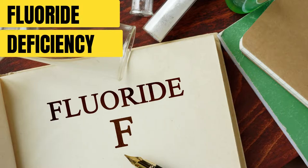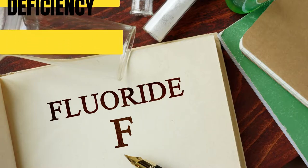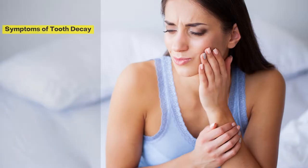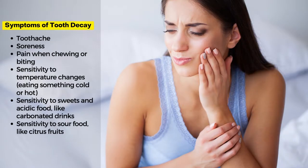Eating habits high in carbohydrates and sugars, such as candy or soda which contain high amounts of artificial sweeteners like aspartame, also contribute to decay. Symptoms of tooth decay include toothache, soreness, pain when chewing or biting, sensitivity to temperature changes when eating something cold or hot, and sensitivity to sweets, acidic food like carbonated drinks, and sour food like citrus fruits.